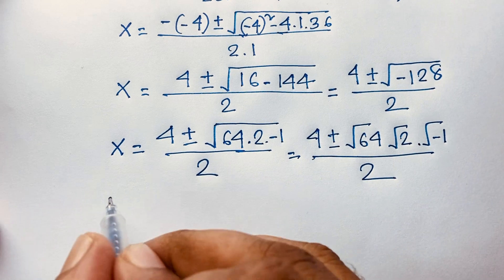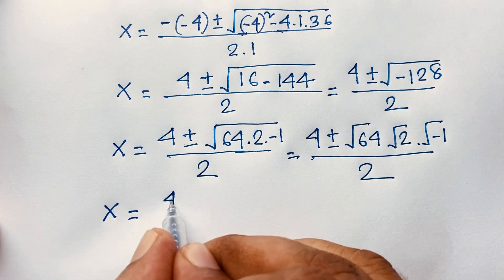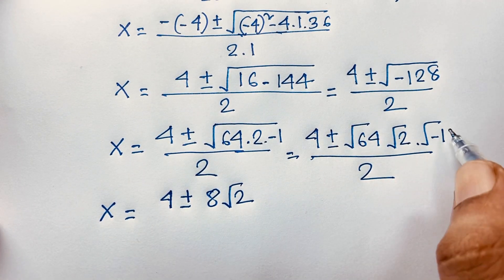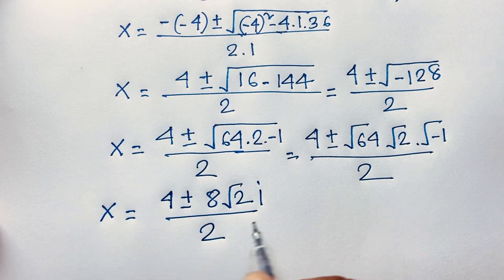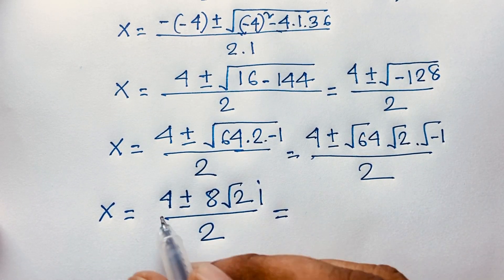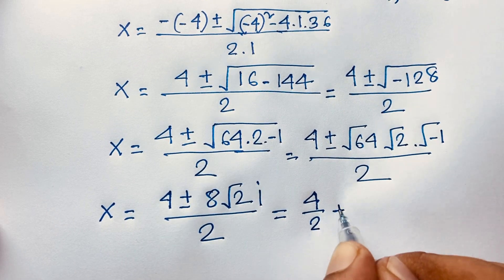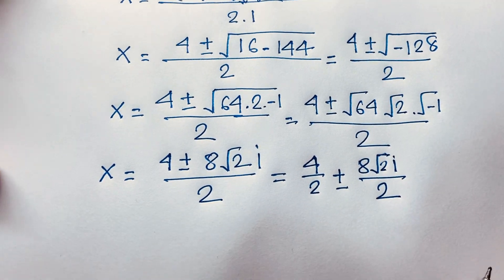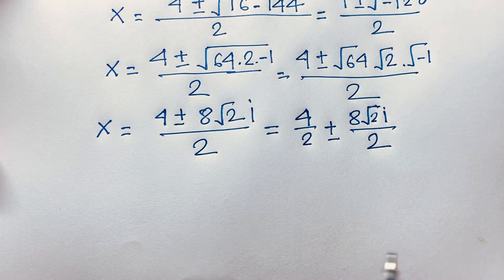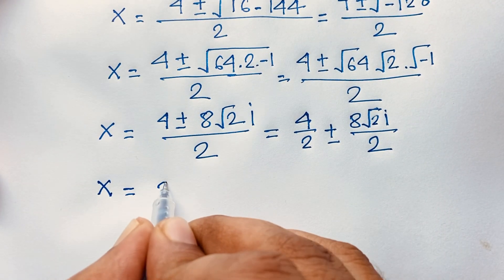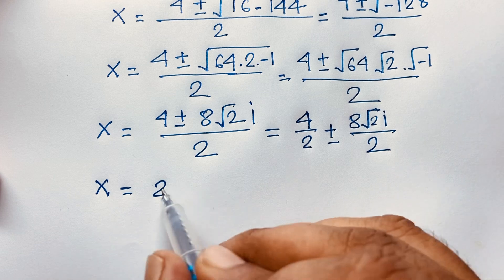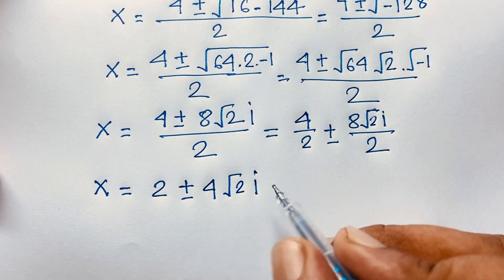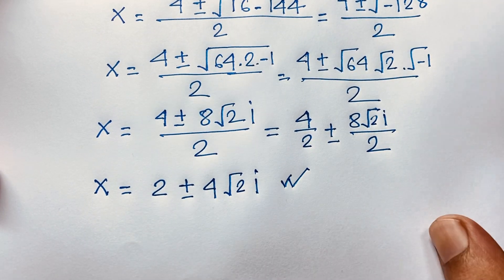Then x equals 4 plus or minus: square root of 64 is 8, times square root of 2, times square root of negative 1 which is i, over 2. Separating: 4 over 2 plus or minus 8 over 2 times square root 2 times i. So x is equal to 2 plus or minus 4 square root 2 i. This is the value of x in this math problem.